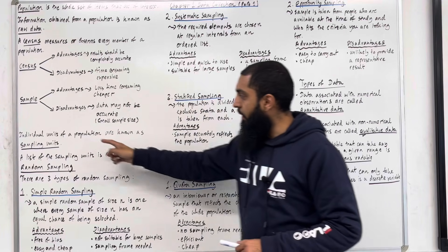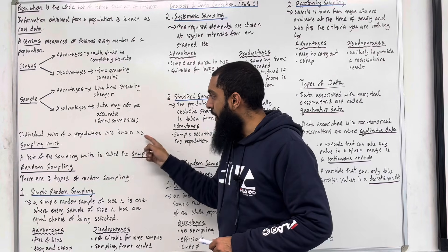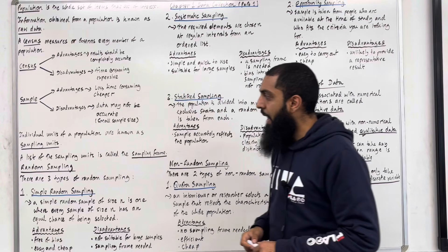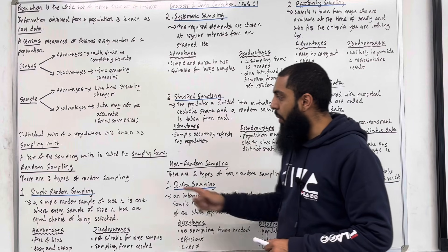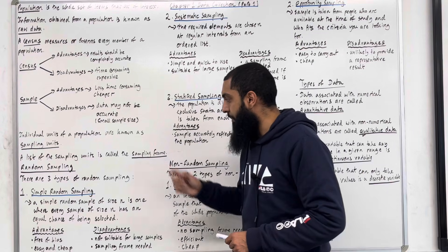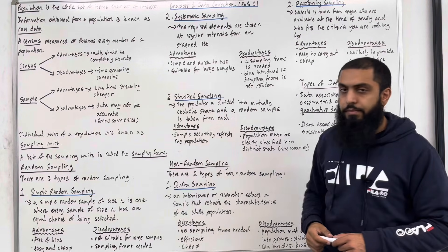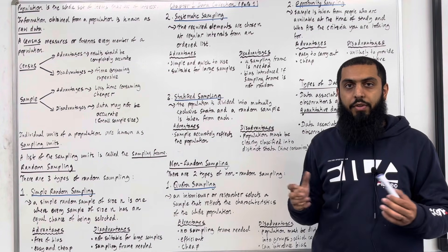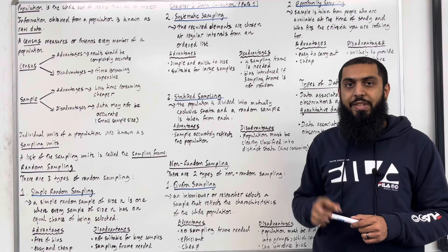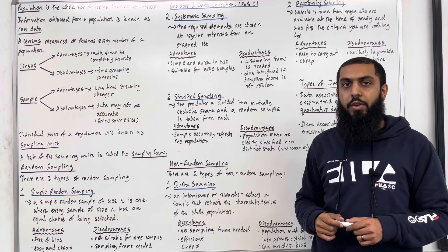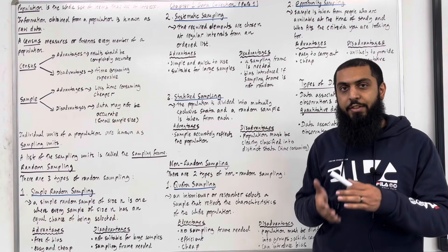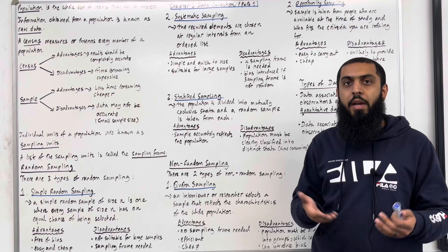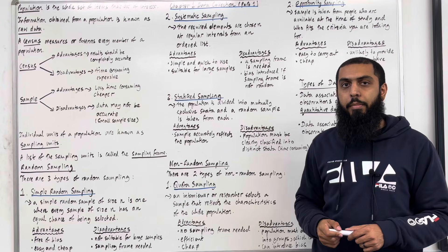Individual units of a population are known as sampling units. A list of the sampling units is called the sampling frame. So, if we have a class of 30 students, the individual students are called the sampling units, and a list of students — or you could say the register — is called the sampling frame.